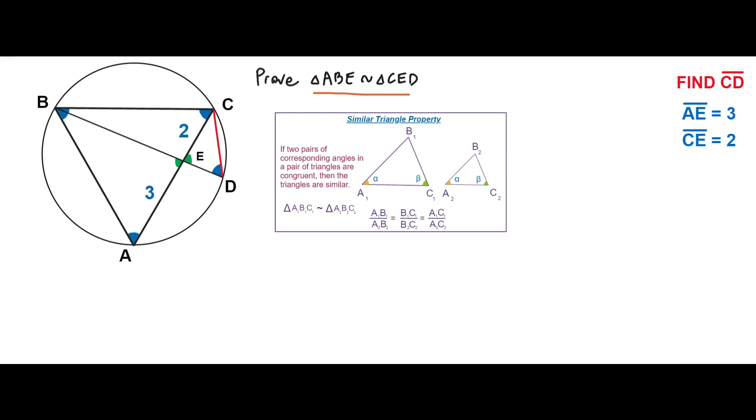Similar triangles theorem states that the ratio of corresponding sides of the triangles are the same. The segment AB over segment CD is equal to segment BE over segment CE. We know that the segment AB is equal to 5, the segment CE is equal to 2. In order to find the length of the segment CD in this equation, we have to obtain the length of the segment BE.